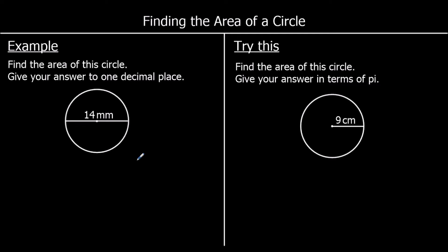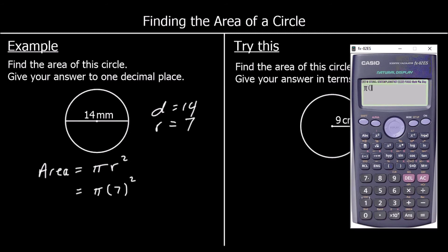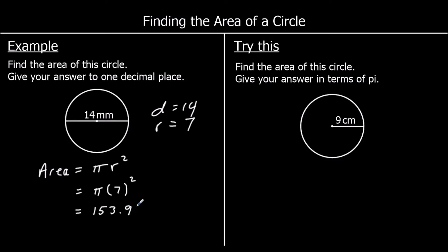To find the area of a circle, the formula is pi times the radius squared — pi r squared. In this first example, we've got a diameter of 14 millimeters. A radius is half of a diameter, so that will be 7 millimeters. So the area is going to be pi times 7 squared. We're giving our answer to one decimal place, so I'm going to type this in the calculator: pi times 7 squared comes up as 49 pi. Pressing the S-to-D button to one decimal place, we've got 153.9 millimeters squared. Here's one for you to try.